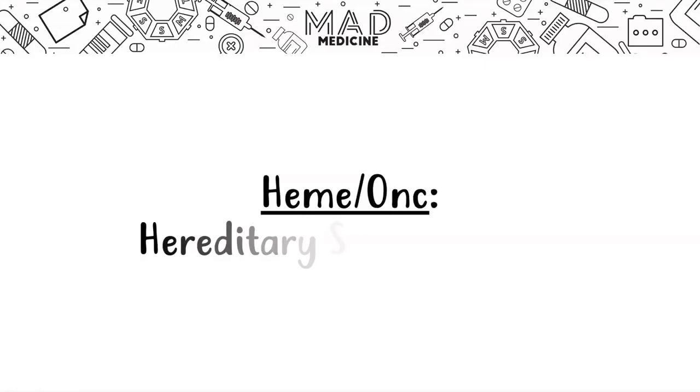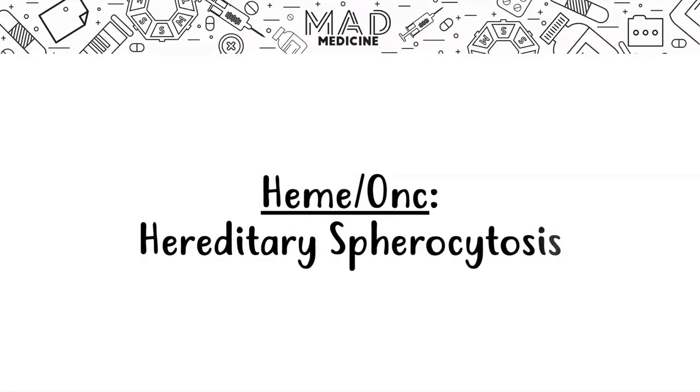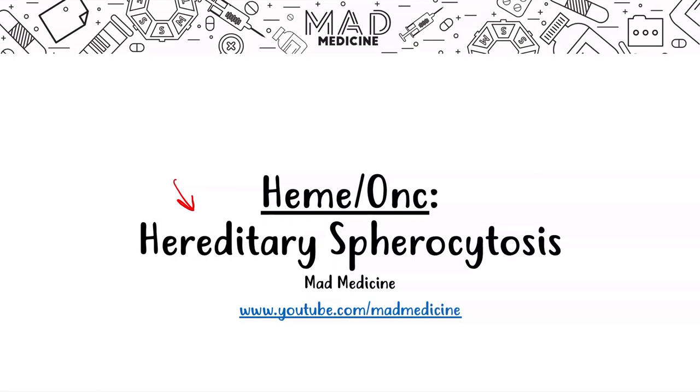Welcome back to Mad Medicine. In this lecture, we're going to be discussing hereditary spherocytosis. This is going to be starting our hemolytic normocytic anemias from now on. We already talked about our non-hemolytic normocytic anemias, and you can see those videos and those lectures on our YouTube channel, youtube.com forward slash mad medicine.